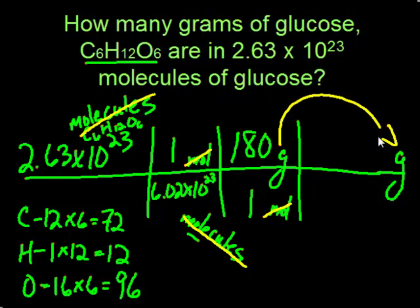And now it's just a matter of doing the math behind this, because all of our labels worked out. So we have 2.63 exponent to the 23rd, and we're going to divide that by 6.02 exponent to the 23rd. And then we're going to take that value and multiply that by... I'm sorry, something went wrong there on my calculator. Let's try that one more time.